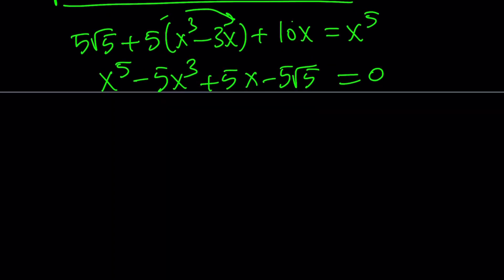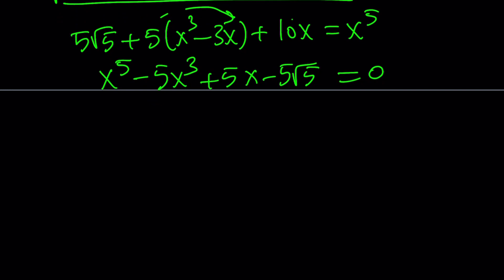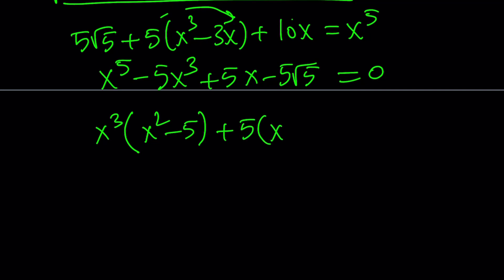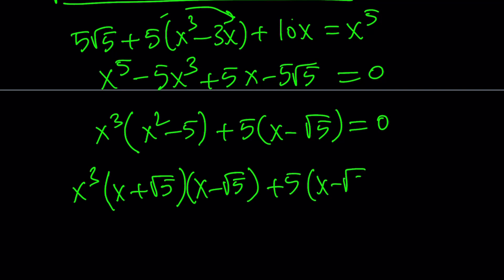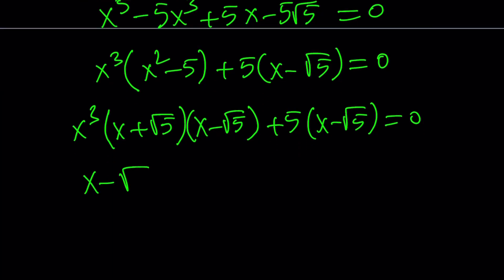This equation becomes factorable. It's not magic - the problem is arranged this way. Most competition problems are contrived. We take out x to get x(x² − 5), then notice x² − 5 is factorable over the irrationals as (x + √5)(x − √5). So x − √5 stands out as a root, and the rest gives us a quartic: x⁴ + 5√5·x³ + 5, with a factor of (x − √5).